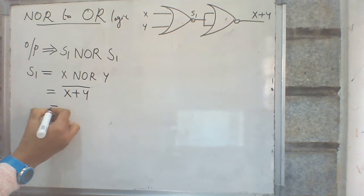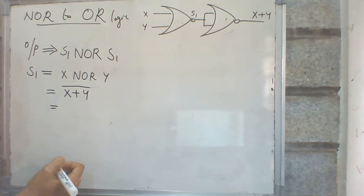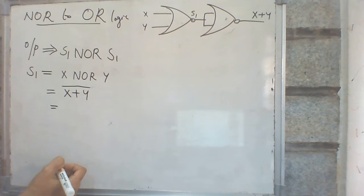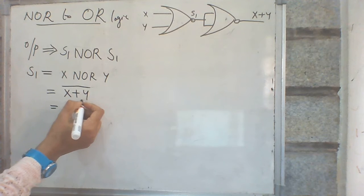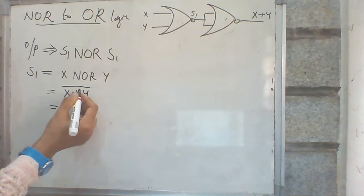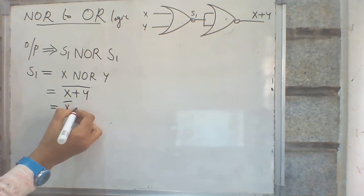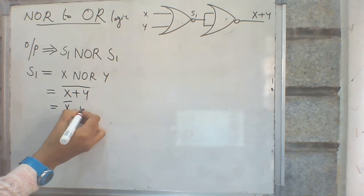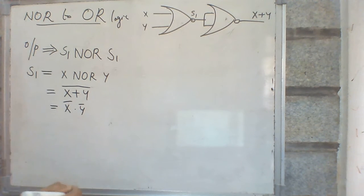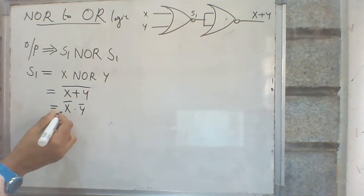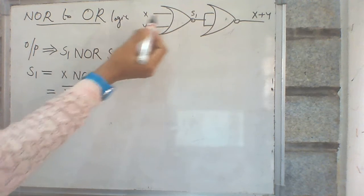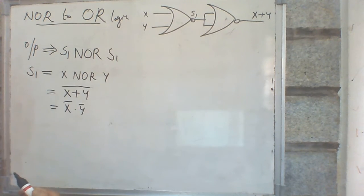Then what is the value of X plus Y the whole bar? We need to apply De Morgan's theorem. By De Morgan's theorem, X plus Y the whole bar is equal to X bar dot Y bar. So the value of S1 is equal to X bar Y bar.